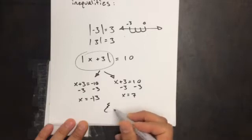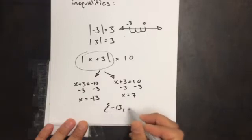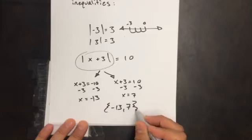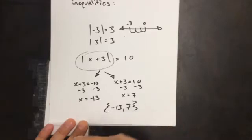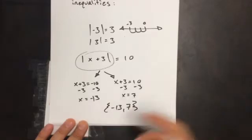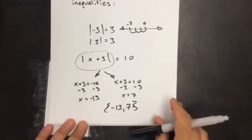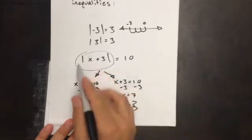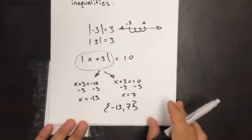I'll put the solution in roster notation. We usually want to put the lower number first. So the answer is negative 13 and seven — those are the two numbers that will make the expression 10 units away from zero.